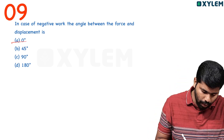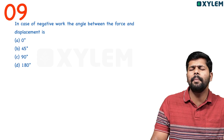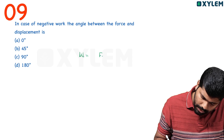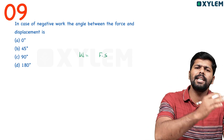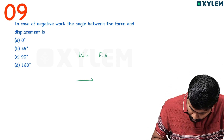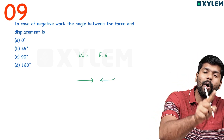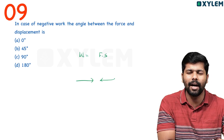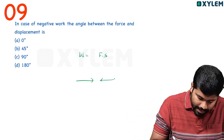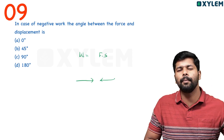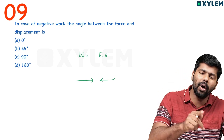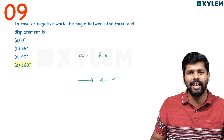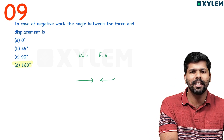Moving to the next option. We have this equation: Work W is equal to force into displacement. If force and displacement are in opposite directions, we consider that work as negative. If the angle between them is in the opposite direction, it is 180 degrees. So the correct option is D — 180 degrees.